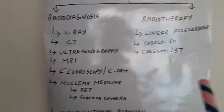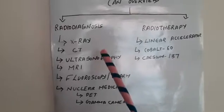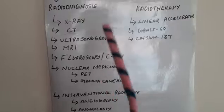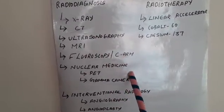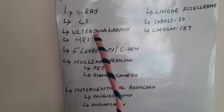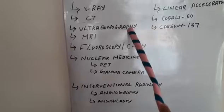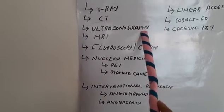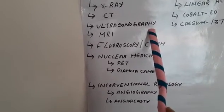The amount of radiation used in radiotherapy is comparatively higher than in radio diagnosis. Ionizing radiations are used in X-ray, CT, fluoroscopy, C-arm, and nuclear medicine, whereas ultrasonography and MRI do not use ionizing radiations. Ultrasonography is therefore the main modality for scanning pregnant ladies and pediatric patients.